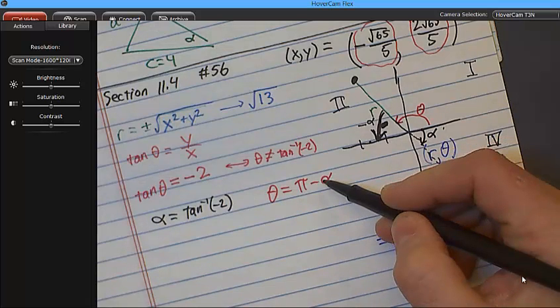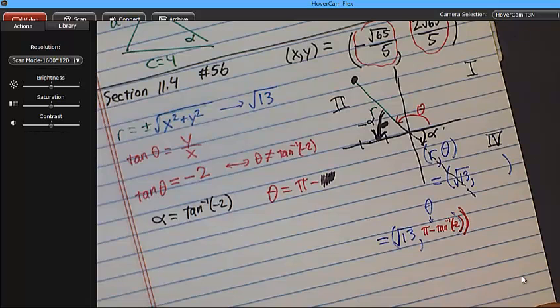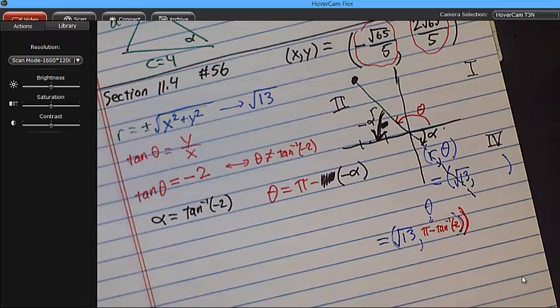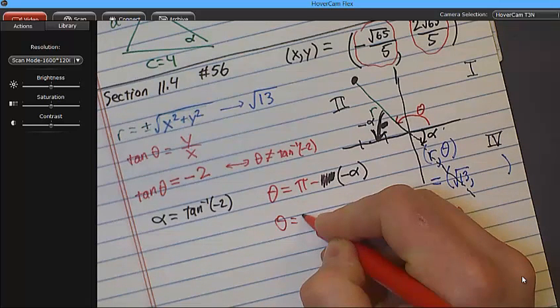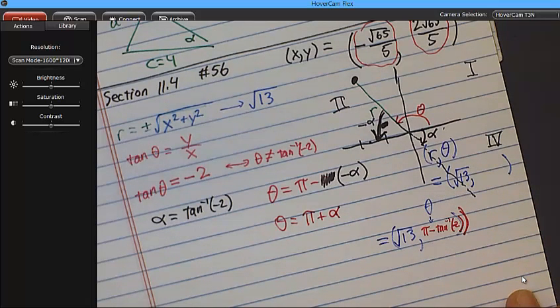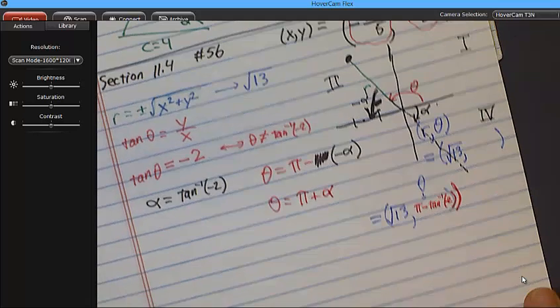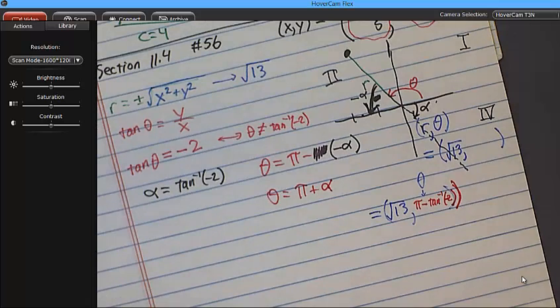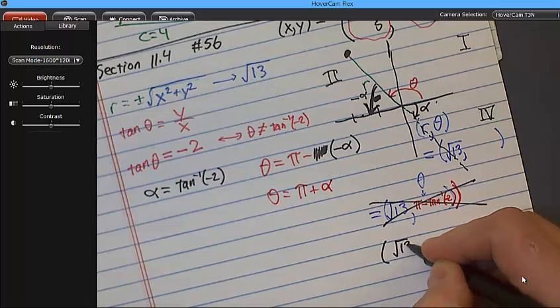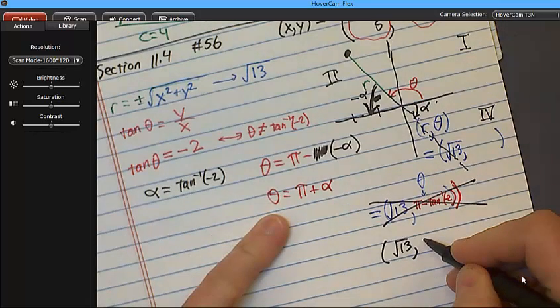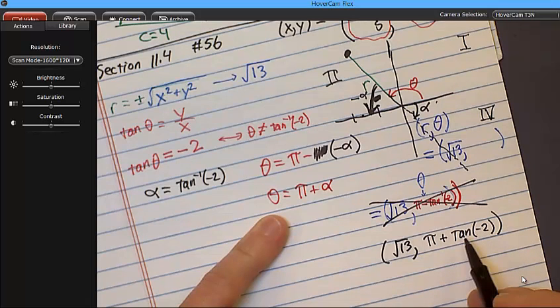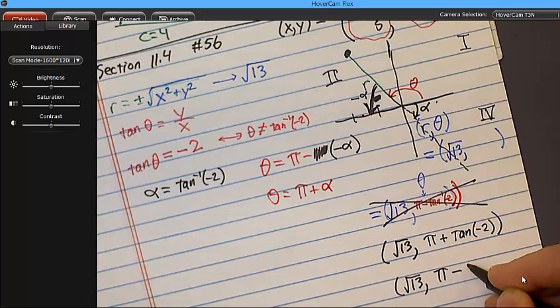Very good point. So what does theta actually equal? Not pi minus alpha. It equals pi minus negative alpha. In other words, what does theta equal? Pi plus alpha. Pi plus alpha. What's alpha again? Oh yeah. The arc tangent of negative 2. So this is not correct anymore, is it? What's the answer? The answer is square root of 13 for my r. And theta is pi plus the arc tan of negative 2. Since tangent is an odd function, you can bring the negative sign out. And so the final answer would be pi minus tangent of 2.